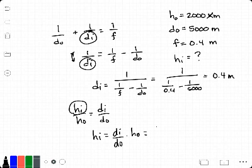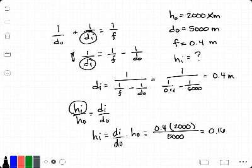So DI we said was 0.4, HO we said was 2,000, and our DO is 5,000. This gets us 0.16 meters, or 16 centimeters. Thank you very much!